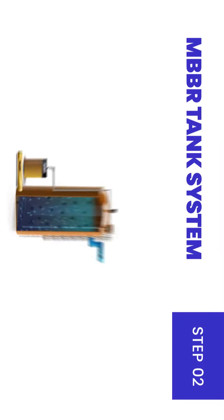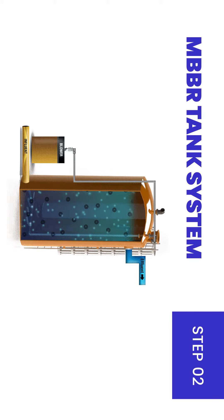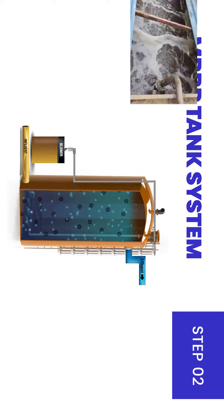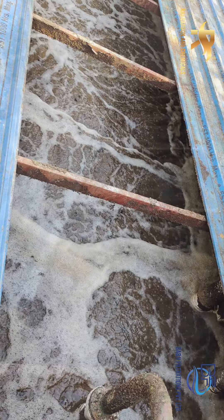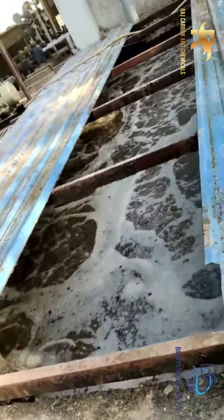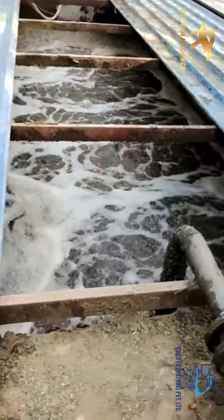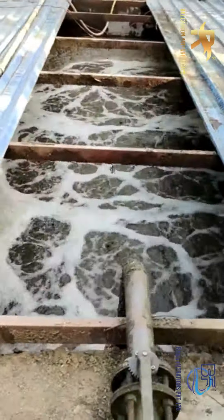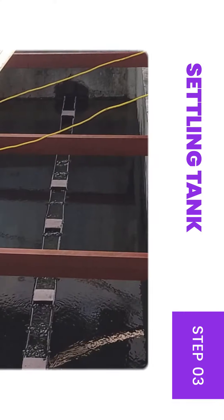The particles flow through MBBR tanks. The MBBR system consists of an activated sludge aeration system where the sludge is collected on recycled plastic carriers. It is a biological process in which microorganisms are used to decompose all the organic waste present inside.